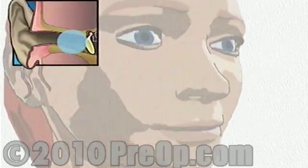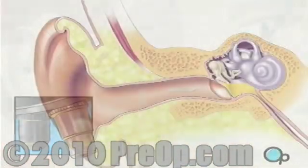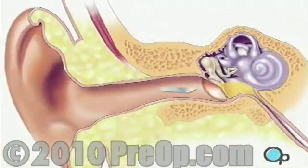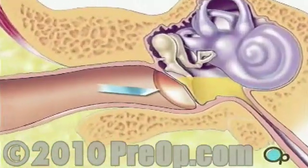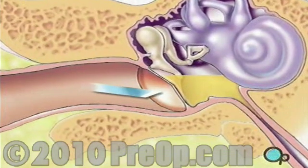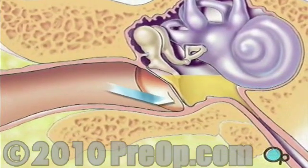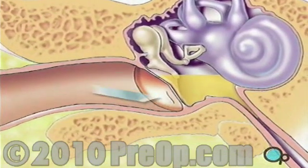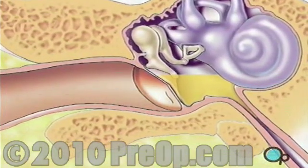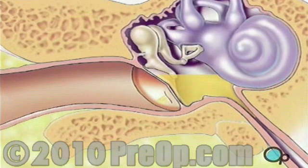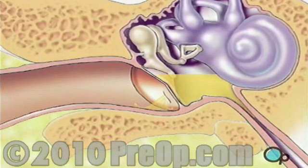While the anesthetic is taking effect, the surgeon will position a microscope in front of the ear. When the operative field is numb, the surgeon will use the microscope to help make a very small incision in the lower part of the eardrum so that the fluid can drain harmlessly away.